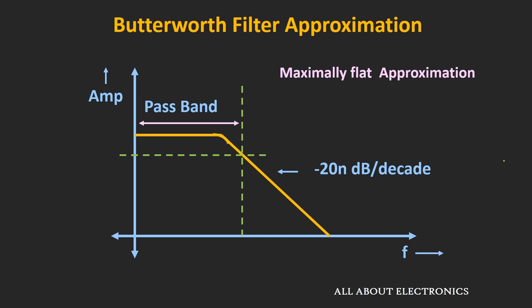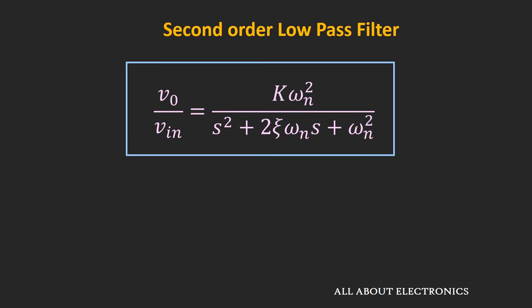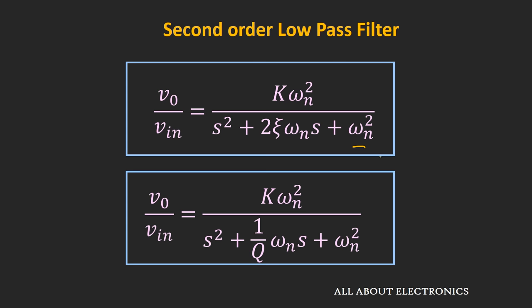First, let's see how to design the second order Butterworth low pass filter, and based on that we will see how to design higher order Butterworth filters. If you look at the transfer function of any second order low pass filter, it can be given by this expression, where K represents the gain and ωn represents the cutoff frequency. We can also write this expression in terms of quality factor Q. First, let's understand how to get this transfer function, and then we will see the criteria for Butterworth filter design.